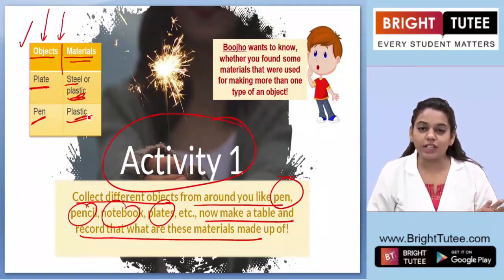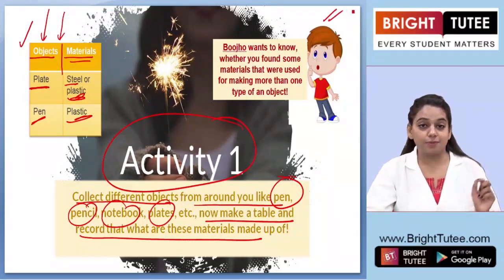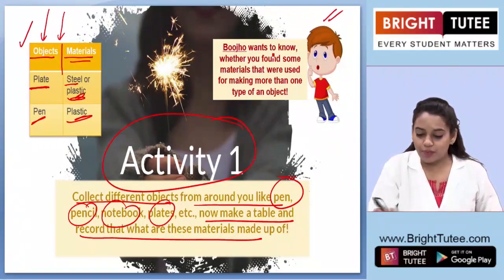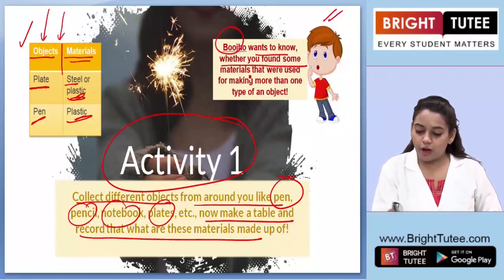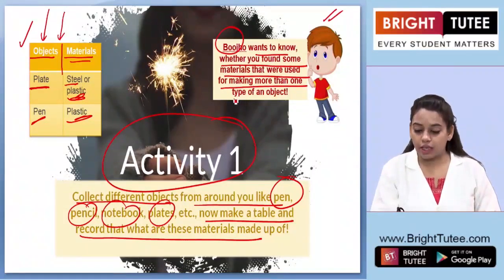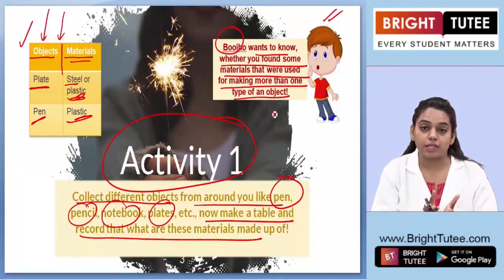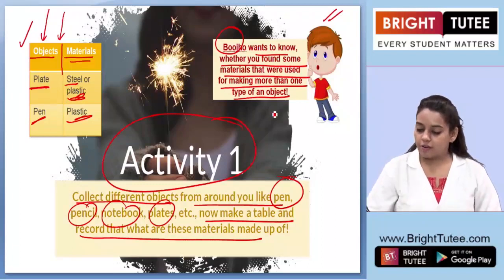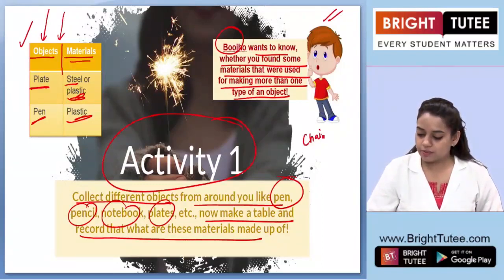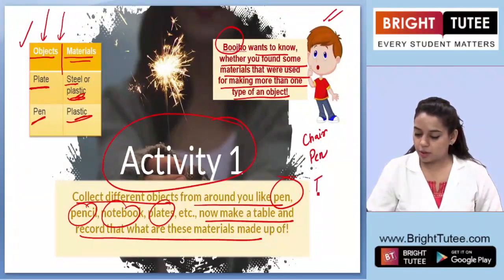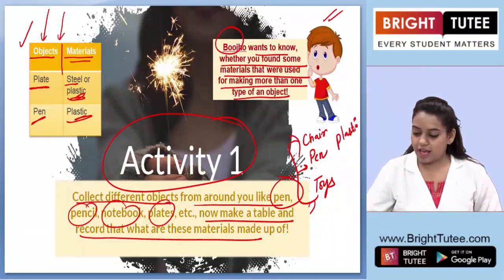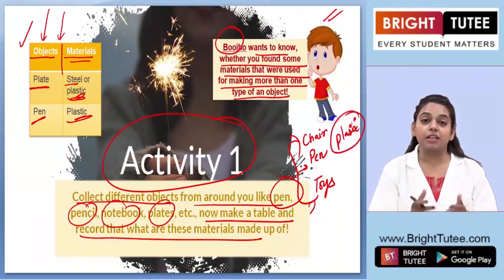Before moving ahead, our friend Bujo has a little problem. Bujo wants to know whether you found some materials that were used for making more than one type of object — that is, the same material is used for making more than one type of object. For example, a chair, pen, and toys are all made up of plastic, so plastic is a material used to make a large number of objects.